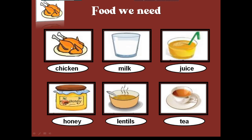এরপর দেখো প্রথম ছবিটা - chicken, মুরগির মাংস। আমরা সবাই চিনি। এরপর দেখো milk, দুধ। Juice, রস - এটা কিসের juice? Next honey, মধু। Lentils, মুসুর ডাল - খুব প্রয়োজনীয় উদ্ভিজ্জ প্রোটিন। এরপর tea, চা। এই খাবারগুলো আমরা খেয়ে থাকি।